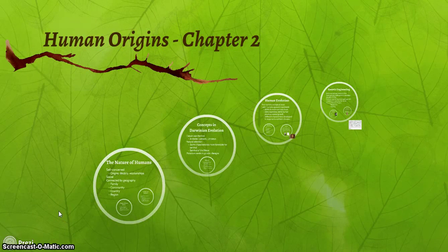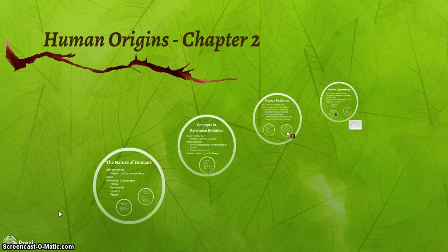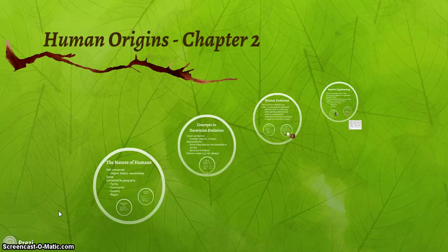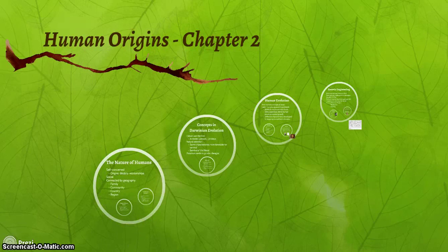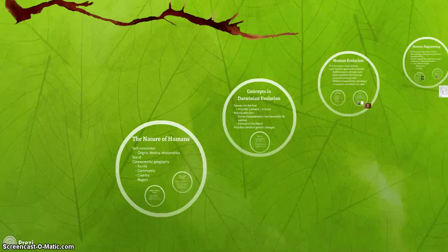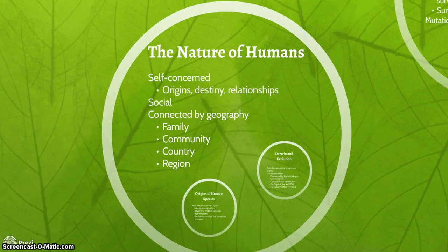Hello, this is Professor Joseph Holbrook. We're going to be talking about Chapter 2 of Elgin Hunt's Social Science Introduction Book. Chapter 2 has to do with human origins. Let us begin with Chapter 2 of Elgin and Colander and Social Science.